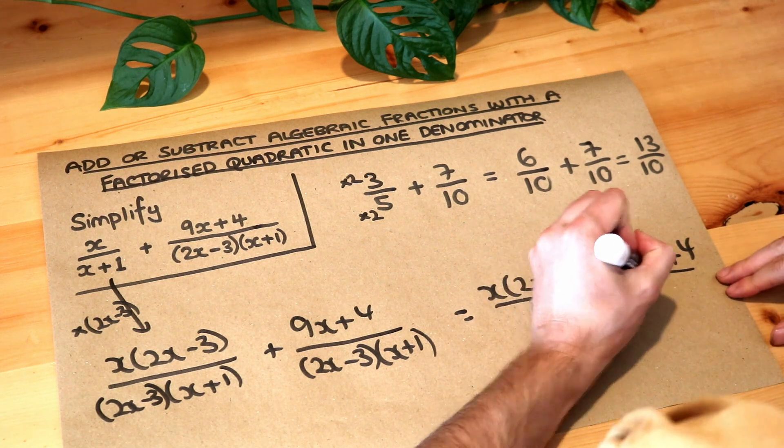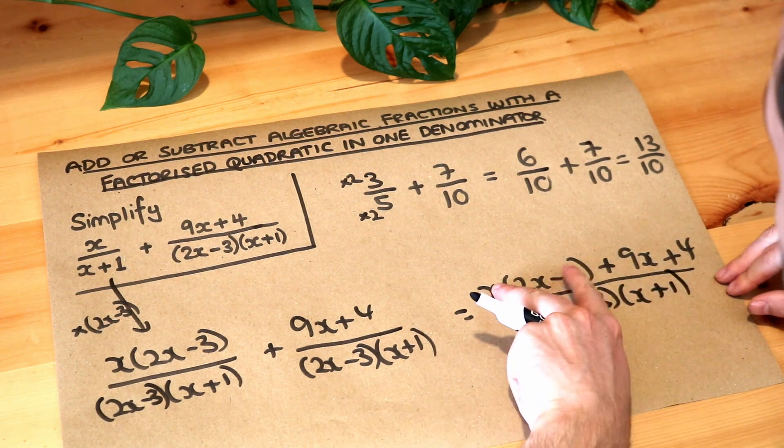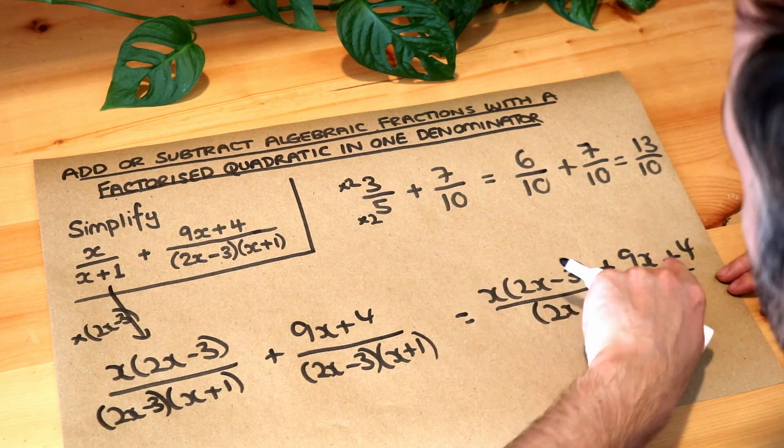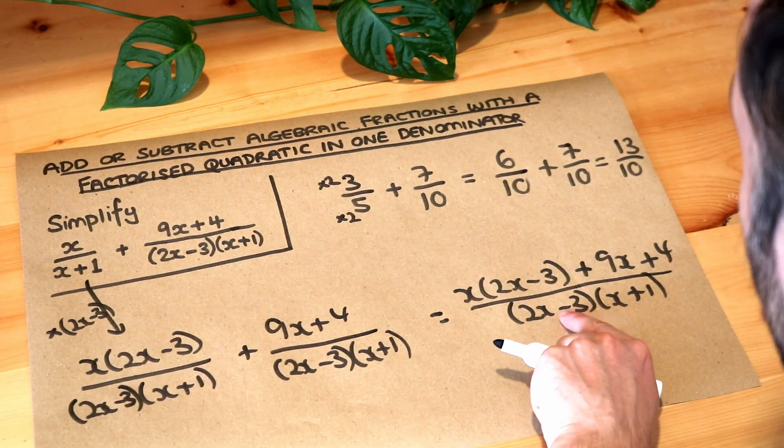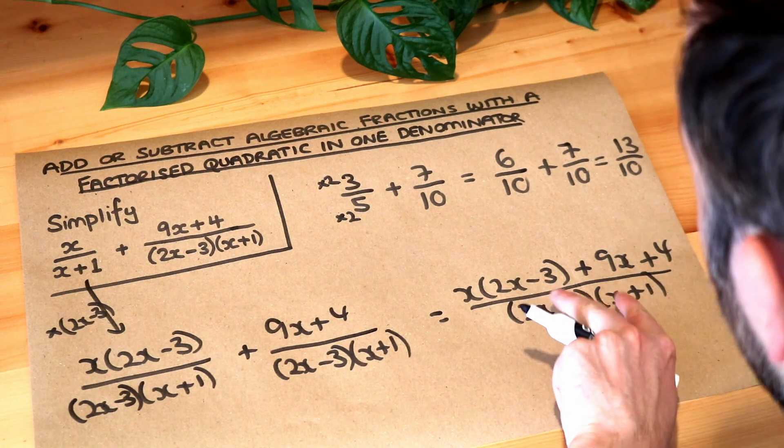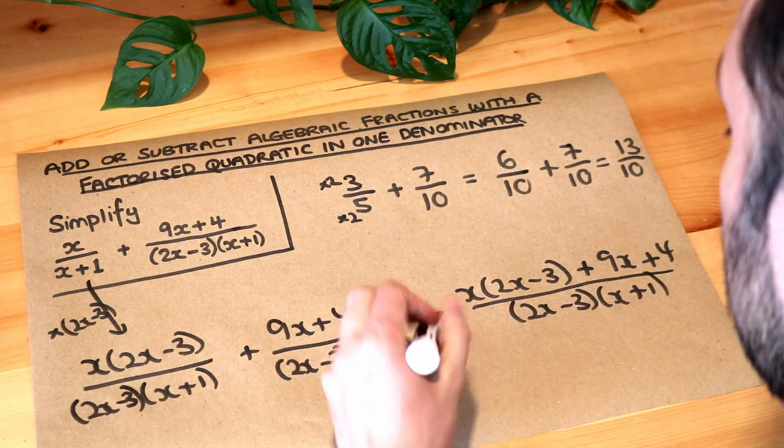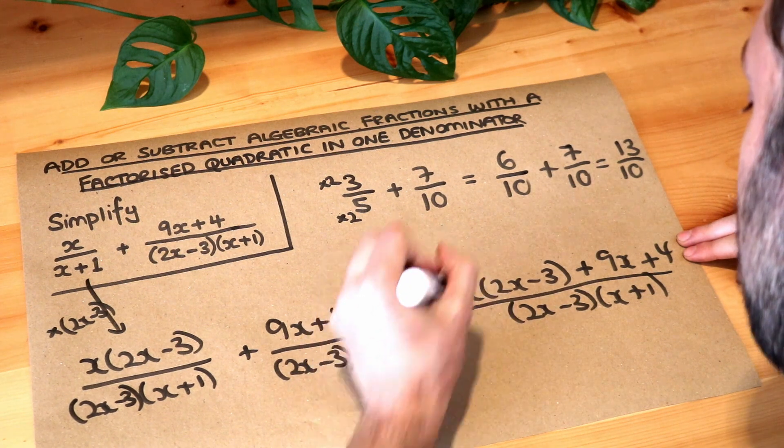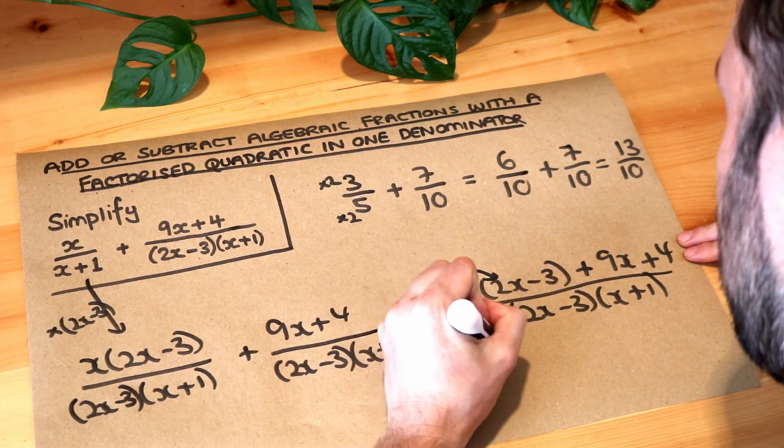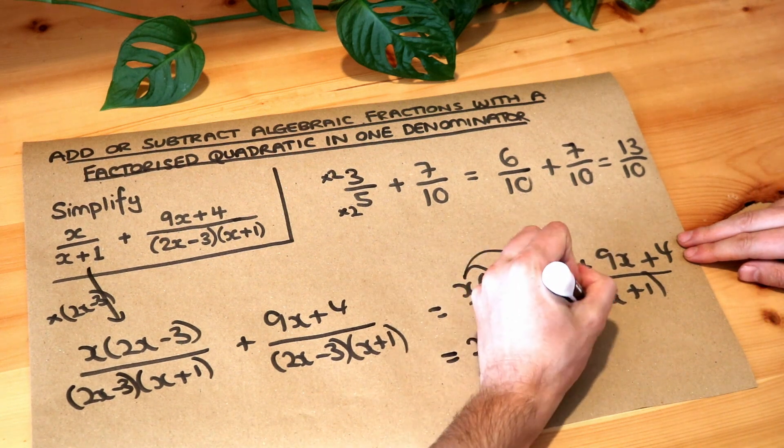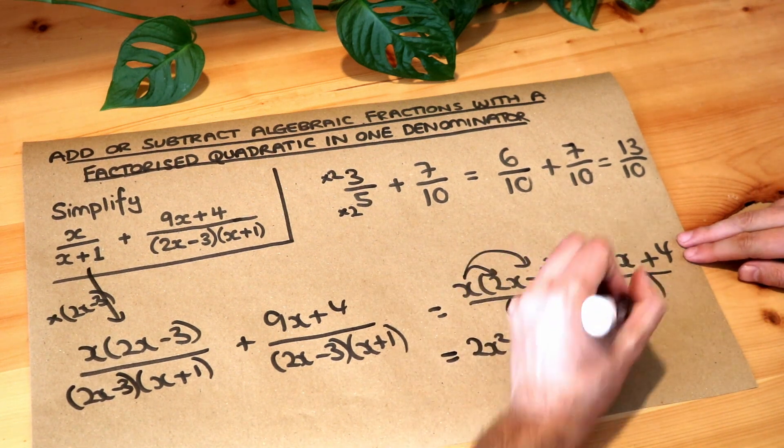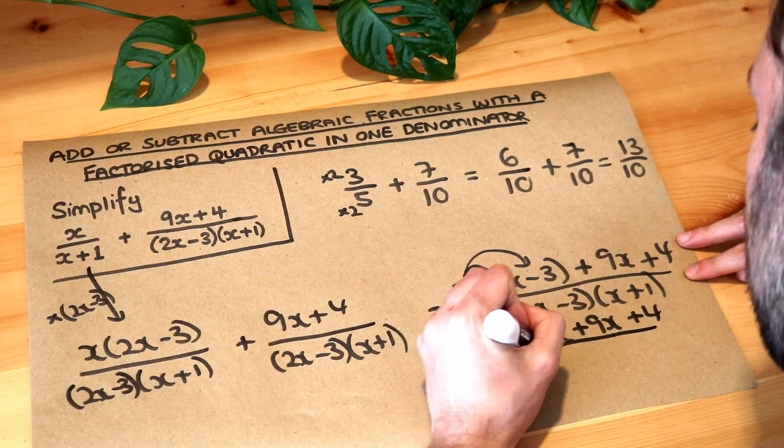Now we're going to expand this bracket because then we're going to be able to collect like terms however I'm not going to expand this denominator because it might cancel with something in the numerator. So if I just expand this we've got the x times the 2x which is 2x squared, the x times the minus 3 which is minus 3x, we've still got that plus 9x plus the 4 and we've got the 2x minus 3 x plus 1.